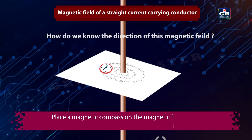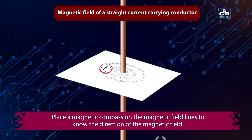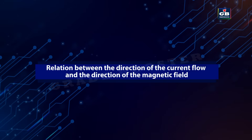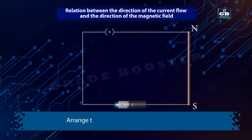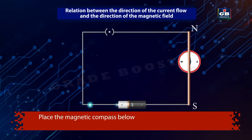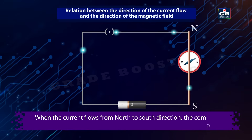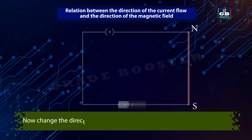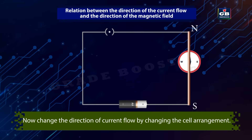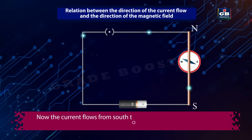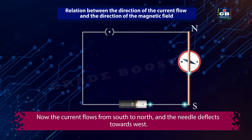Relation between the direction of the current flow and the direction of the magnetic field. Arrange the conductor and circuit as shown. Place the magnetic compass below the conductor and allow the current to pass through it. When the current flows from north to south direction, the compass needle deflects towards east. Now change the direction of current flow by changing the cell's arrangement — the current flows from south to north and the needle deflects towards west. That means if the direction of current flow changes, the direction of the magnetic field also changes.